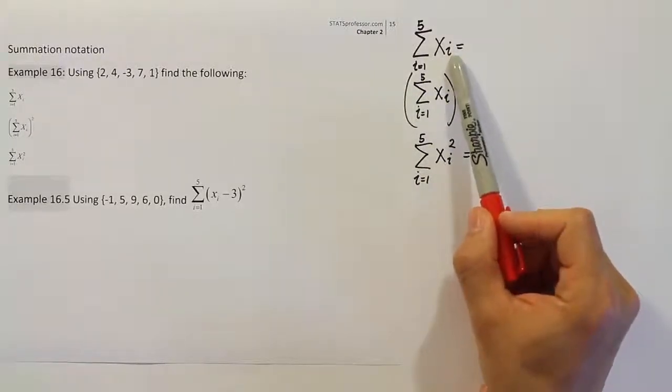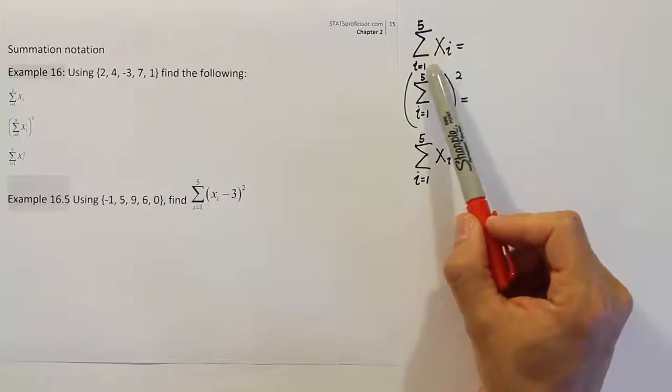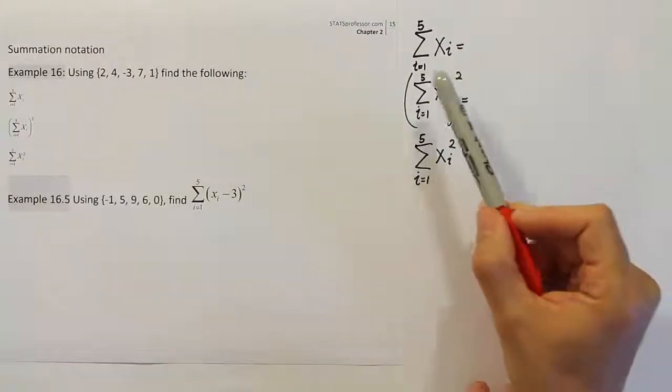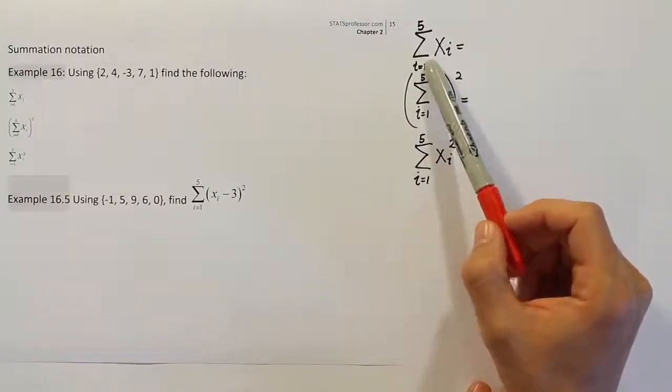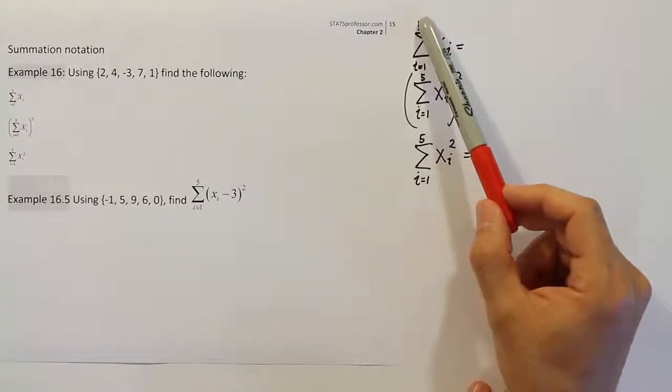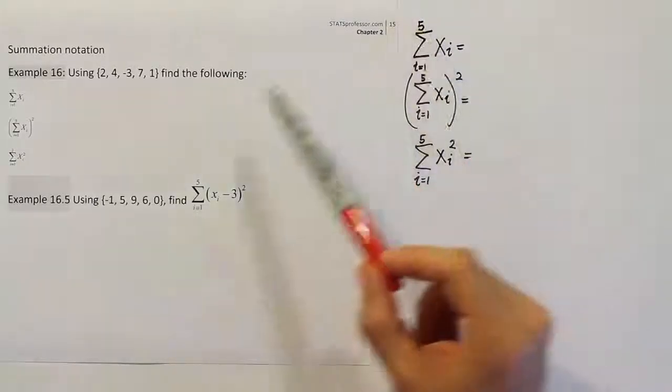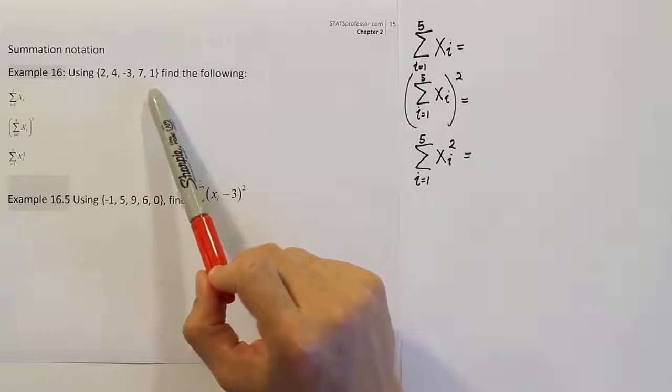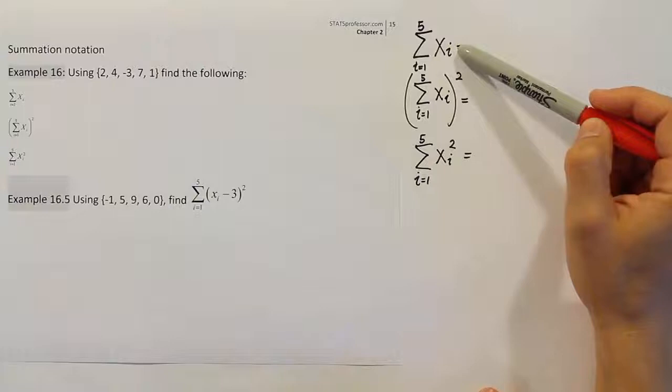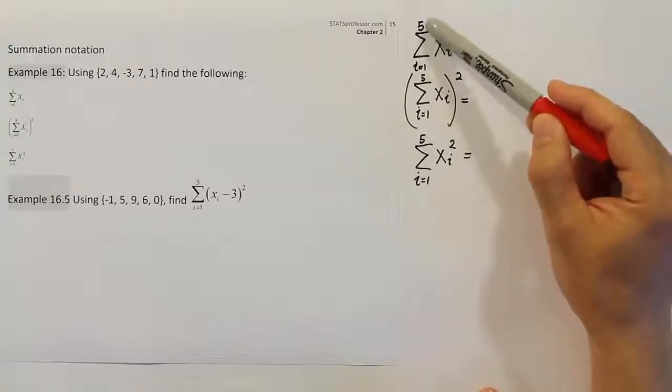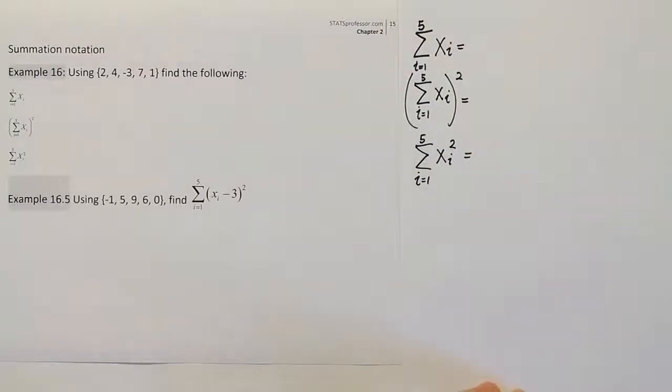And this little i subscript here is an index, and it's telling us where to start and where to end. So it says start from the first value. That one doesn't stand for the number one, it stands for the first x value. And continue to add until you get to the fifth x value. The fifth x value in our case would be the last x value because we have a total of five x values. So this is saying basically, hey, add up all the x values from the first until the fifth. So let's go ahead and do that and see what we get.